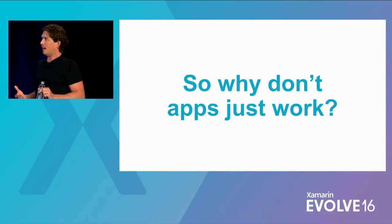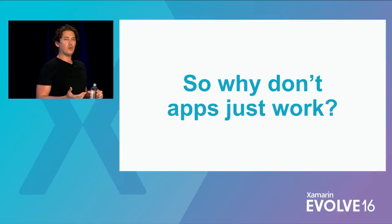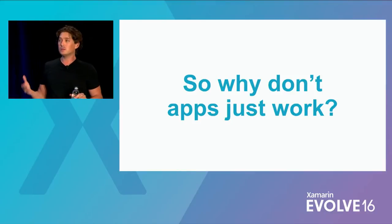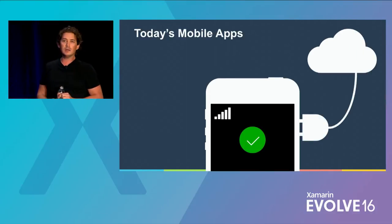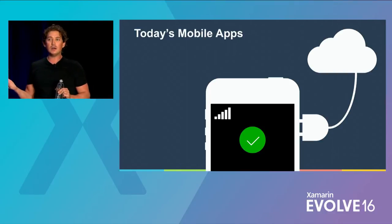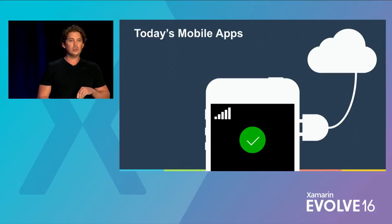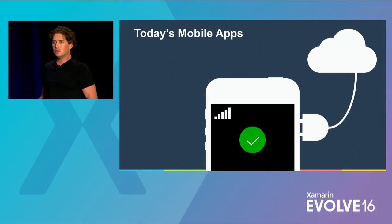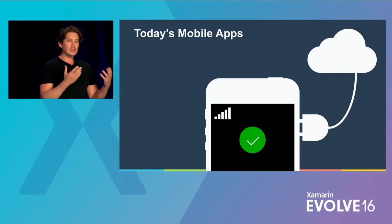So why don't apps just work? What is it about the way that we build applications that makes it so they don't work all the time and aren't always fast? This is a typical mobile application today, deployed with a connection to the cloud at all times, retrieving data to drive the application experience. When I have a good connection to the cloud — a persistent connection with a strong signal — then my application works as expected. It's fast, it's a good user experience, and users are generally happy.